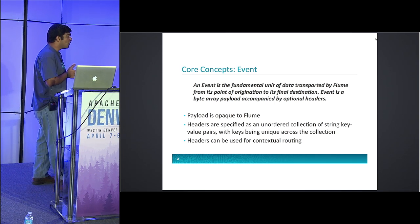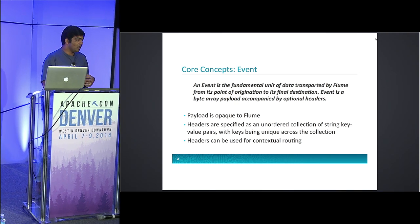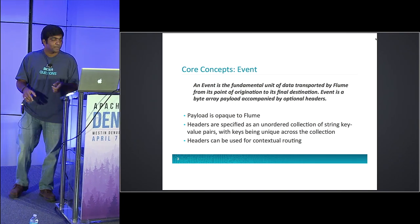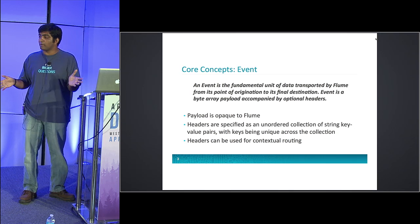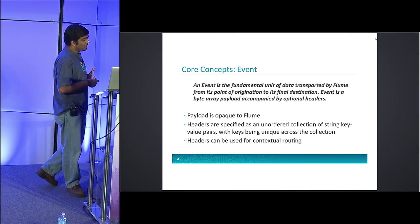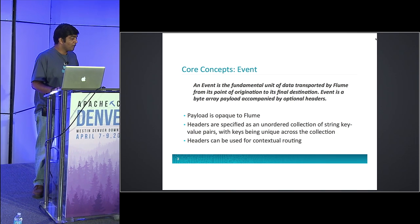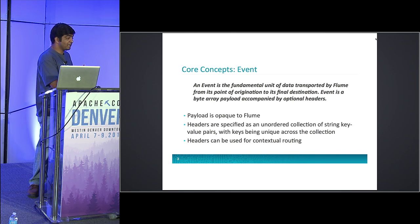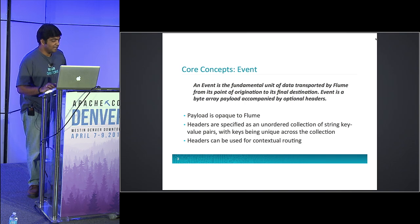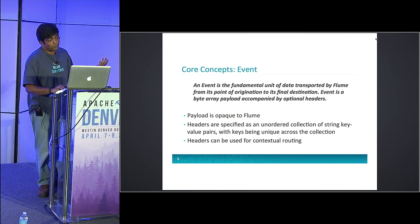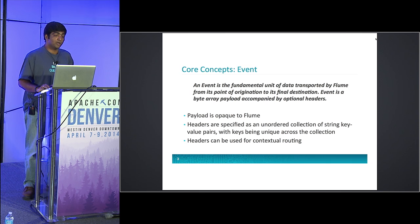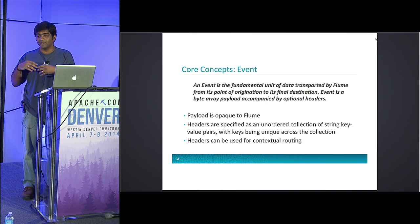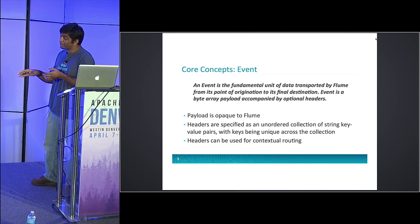The event has a payload which is the body of the event — just a byte array — and a bunch of headers. Headers are represented in Java as a map of key-value pairs. Those headers are usually what you would look at for contextual routing. The way Flume implements contextual routing is using a multiplexing channel selector, which uses the Flume headers to decide where an event goes. Headers are unordered — it's a hash map, not a tree map. You should populate your headers based on your actual data; if your data is priority 2, put a header saying priority equals 2.